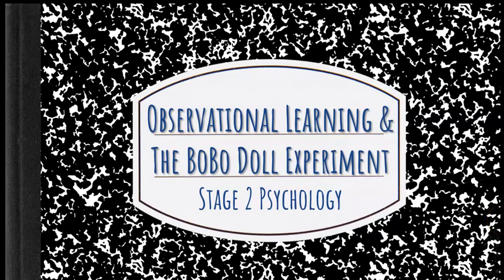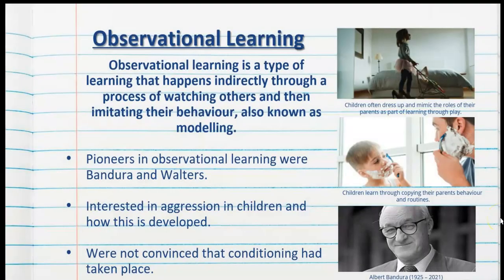Hi everybody and welcome to this video which covers observational learning and the Bobo Doll experiment. This is part of the psychology of learning topic for stage 2 psychology. Observational learning is a type of learning that happens indirectly through a process of watching others and then imitating their behaviour, also known as modelling.